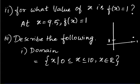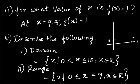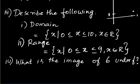The domain is the set of x such that 0 ≤ x ≤ 10, and x belongs to ℝ. The range is the set of x such that 0 ≤ x ≤ 9, x belongs to ℝ. The domain goes up to 10 because the graph has values till 10, whereas the range only goes to 9 because the function values reach a maximum of 9.